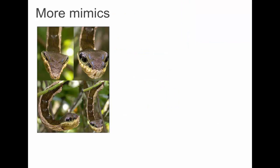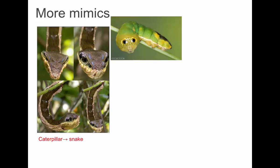These are caterpillars — the end of the caterpillar has evolved to look like the head of a snake. Those aren't real eyes — they're eye spots, just coloration on the exoskeleton to make it look a little scary.